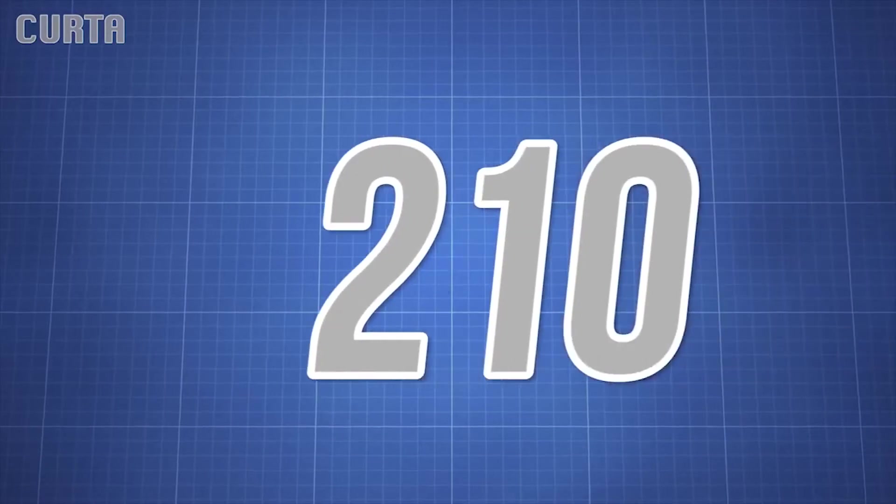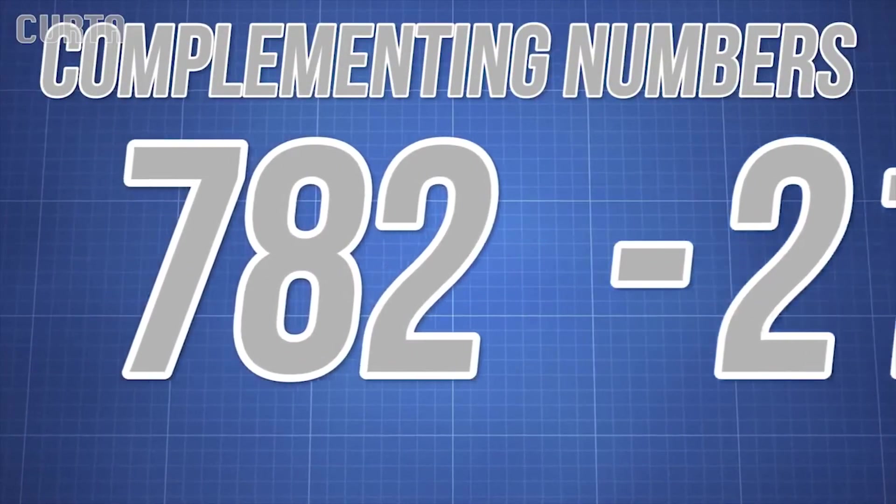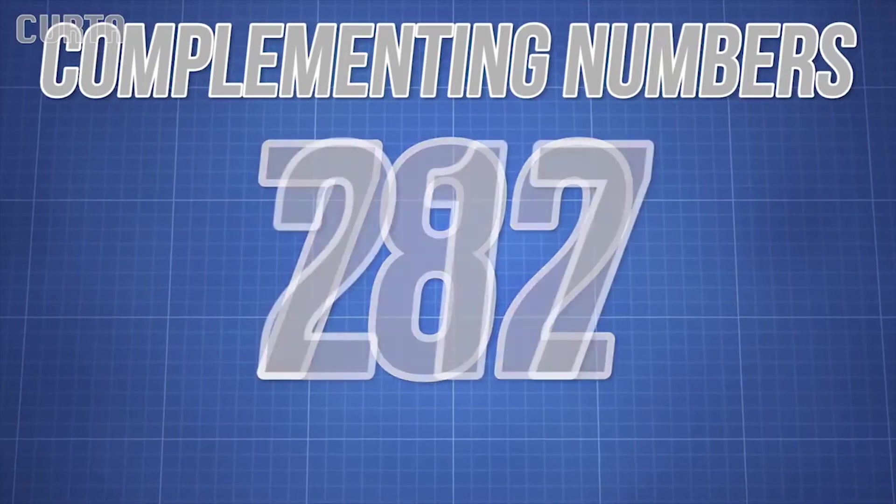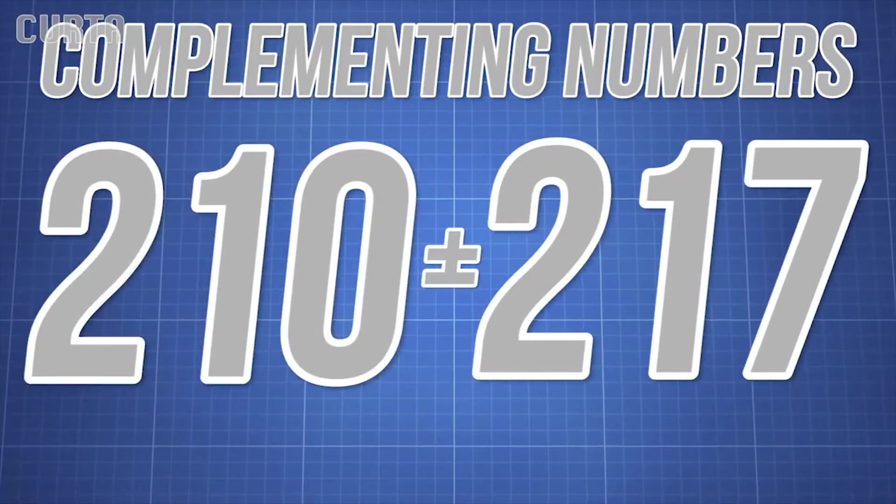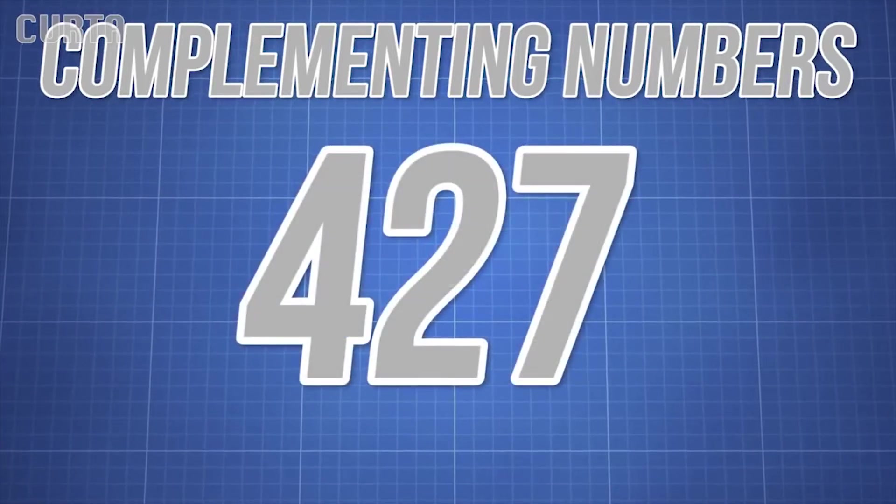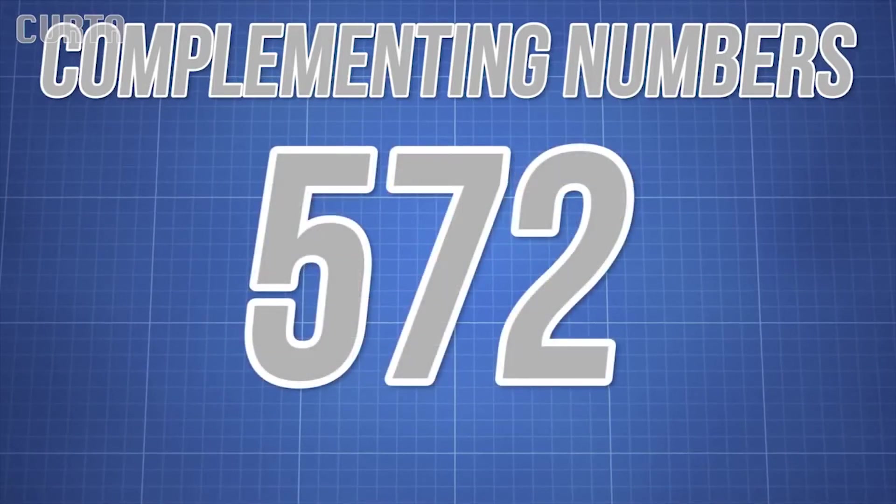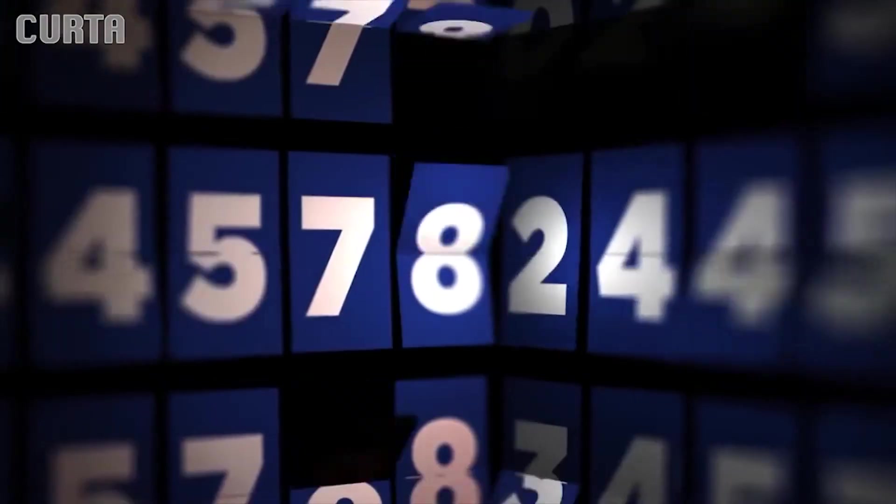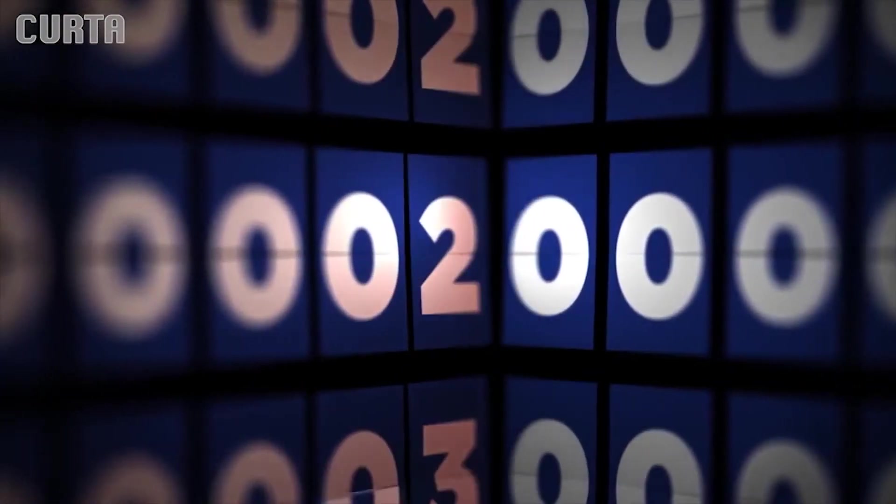If you wanted to subtract 210 from 782 using complementing numbers, you would convert the larger number to its complement, which is 217, and then add that number to 210, equaling 427. Finding the complement of 427 leaves you with 572, which is the final answer to the problem. This principle allowed Hurst-Stark to simplify every mathematical operation down to addition from a mechanical standpoint.